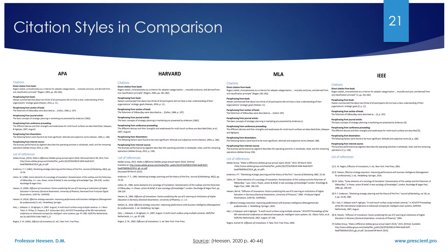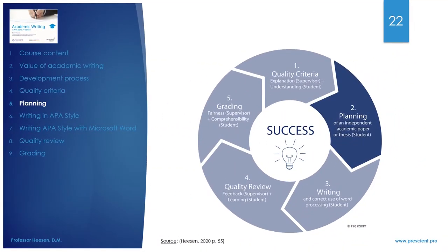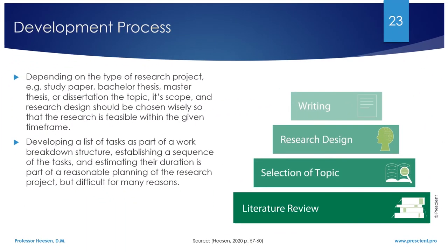Planning your work is difficult for several reasons: wishful thinking, lack of experience, unexpected events, and many more. The following process may be helpful. You should start by reviewing the literature to develop your own knowledge on the topic. Then you select the topic together with your supervisor — listen to them carefully since they have much more experience. Decide on a suited design, and once all this is done, the writing should be easy.